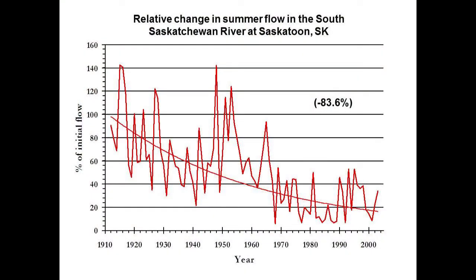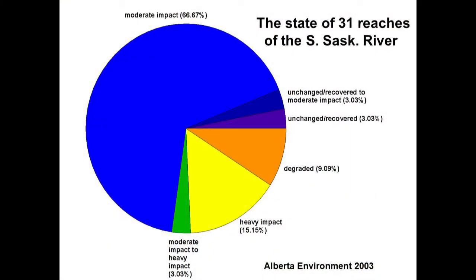Downstream, the South Saskatchewan summer flow shows a long-term downward trend of about 80-some percent. As a result of all those pressures coming together, of the 31 reaches of the South Saskatchewan, the only relatively unchanged ones are a couple in the Red Deer River Basin — the least impacted of the three. The heavily impacted and degraded reaches are all in the Bow and Oldman basins, where the big populations like Calgary and Lethbridge live.